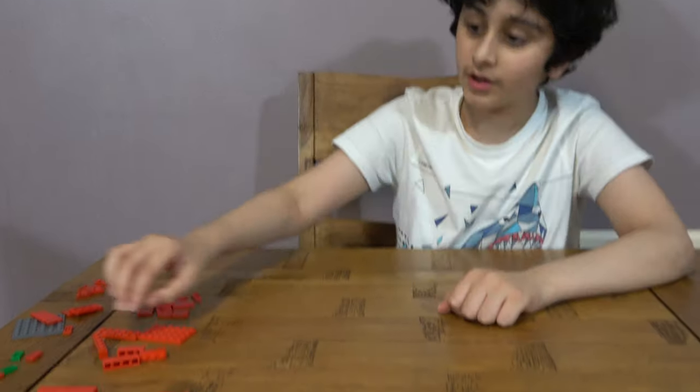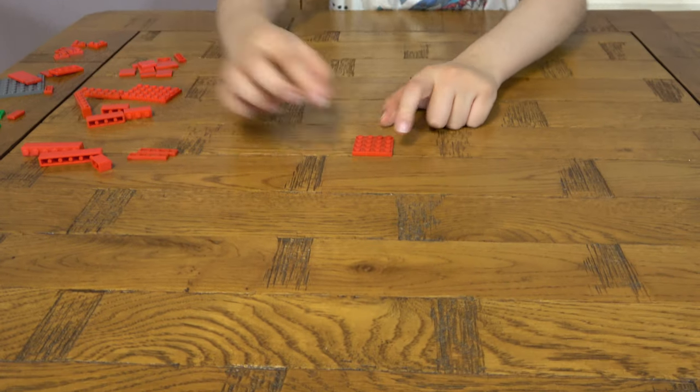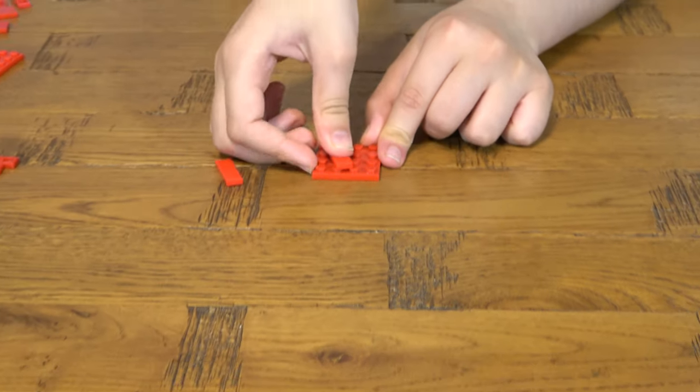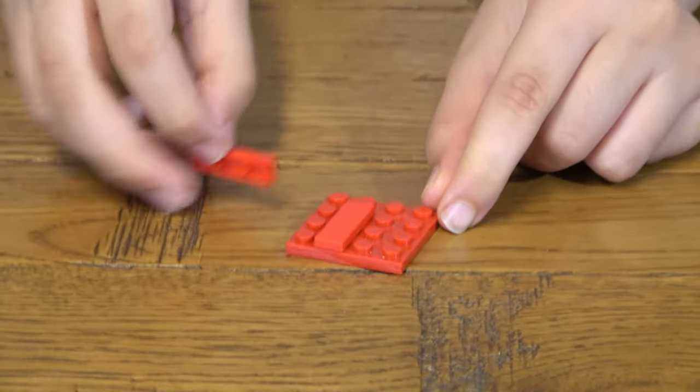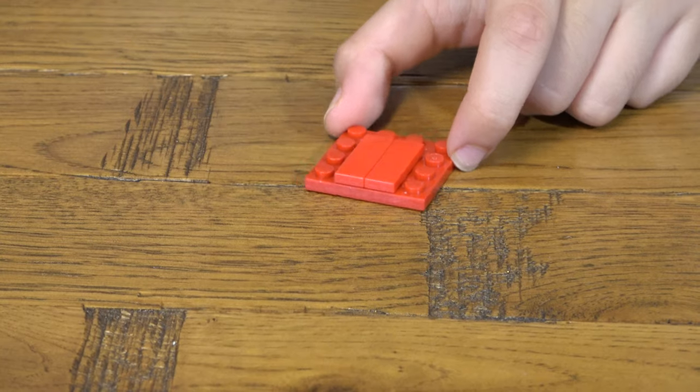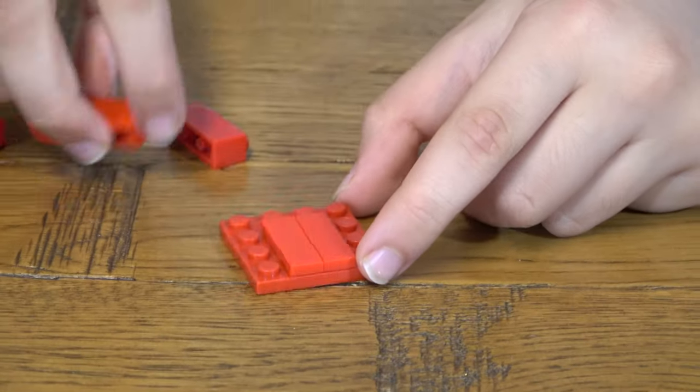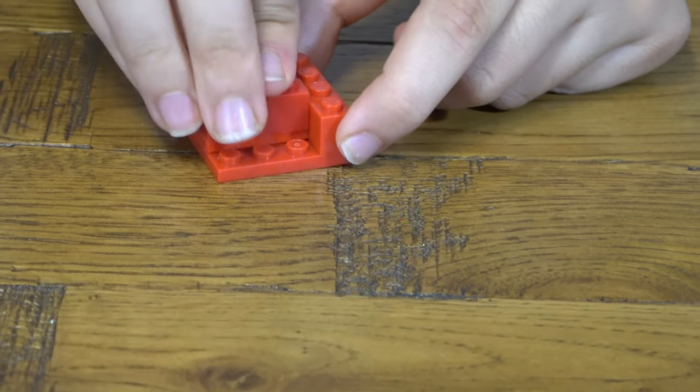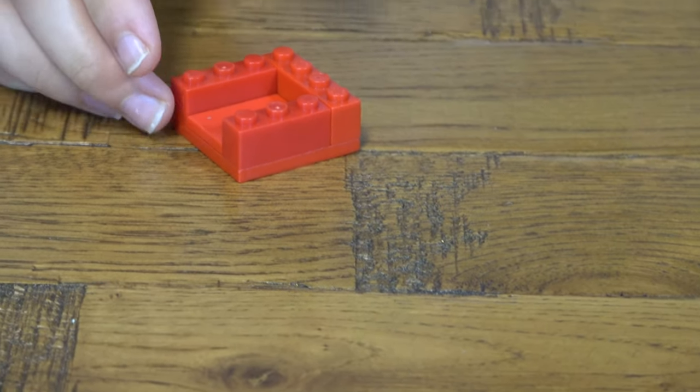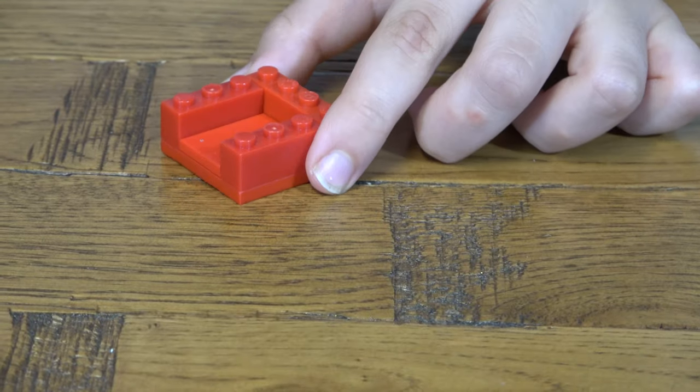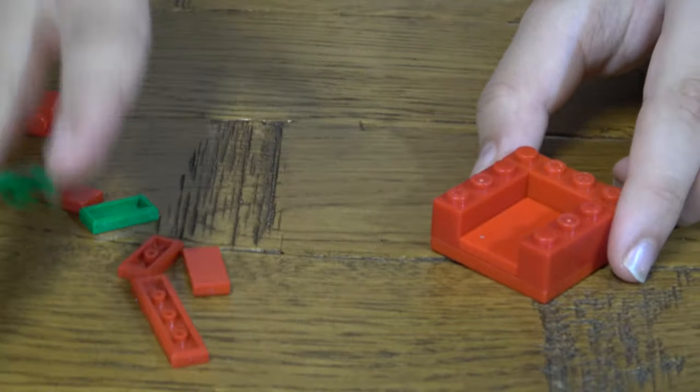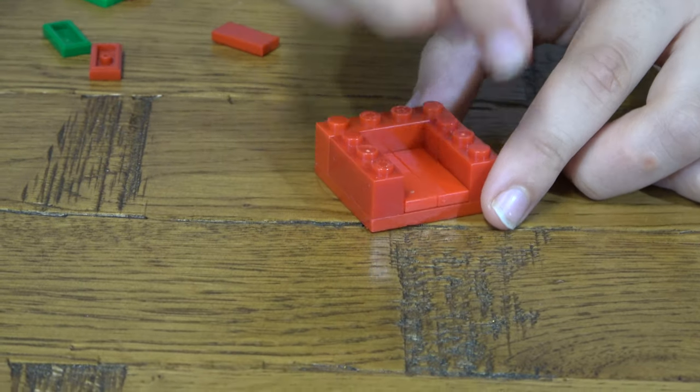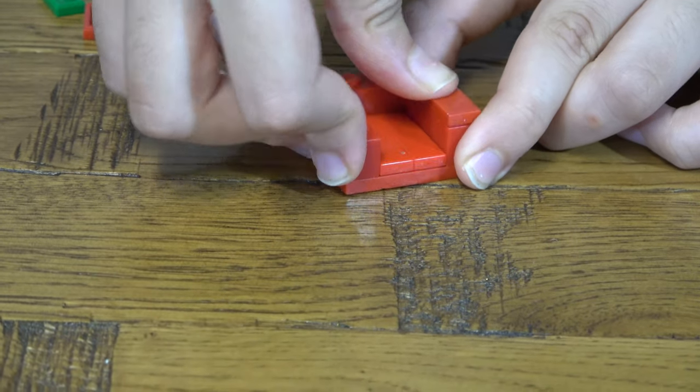So let's start. First thing we need to do is get two of these like this and place these here. Next, we need to get these and start placing them on.